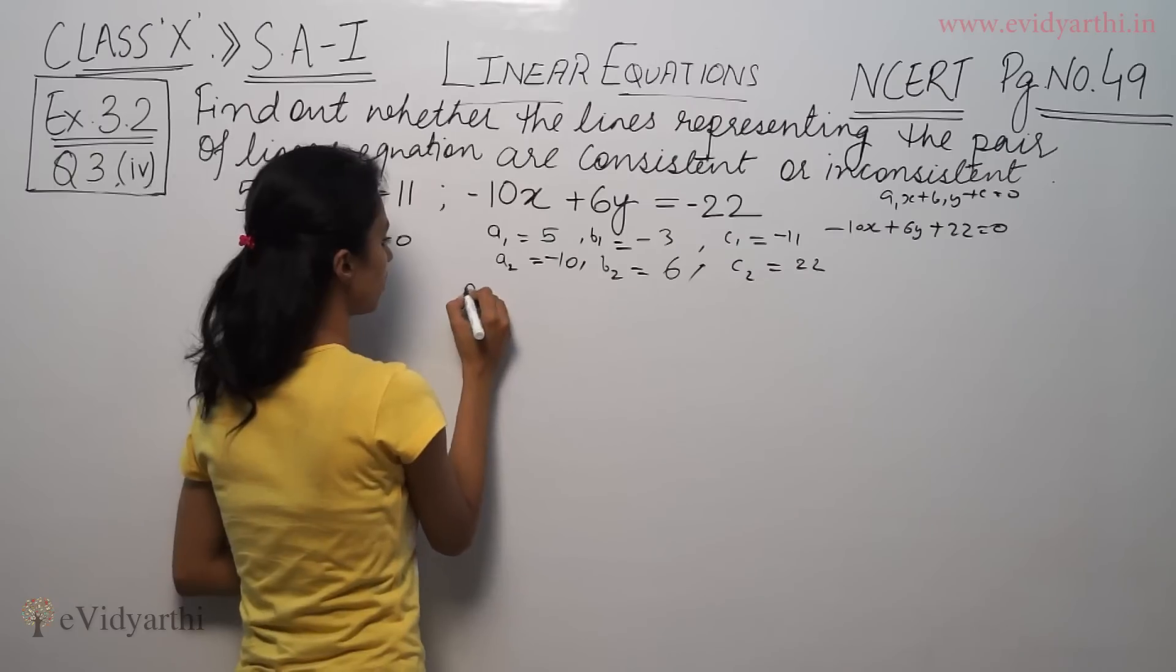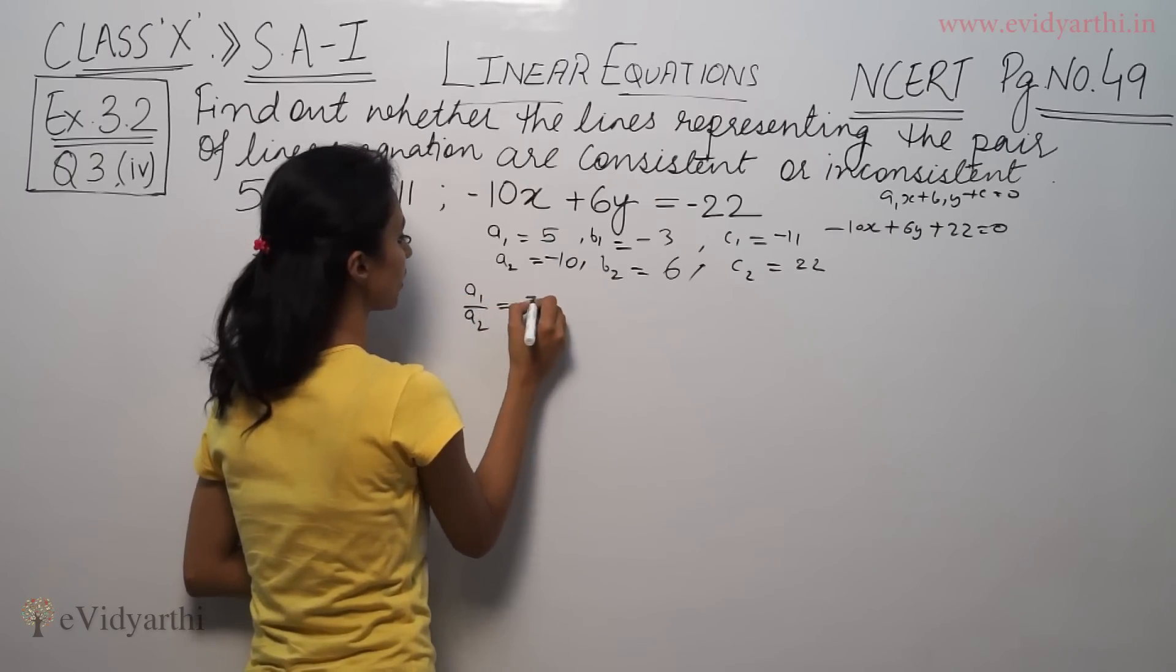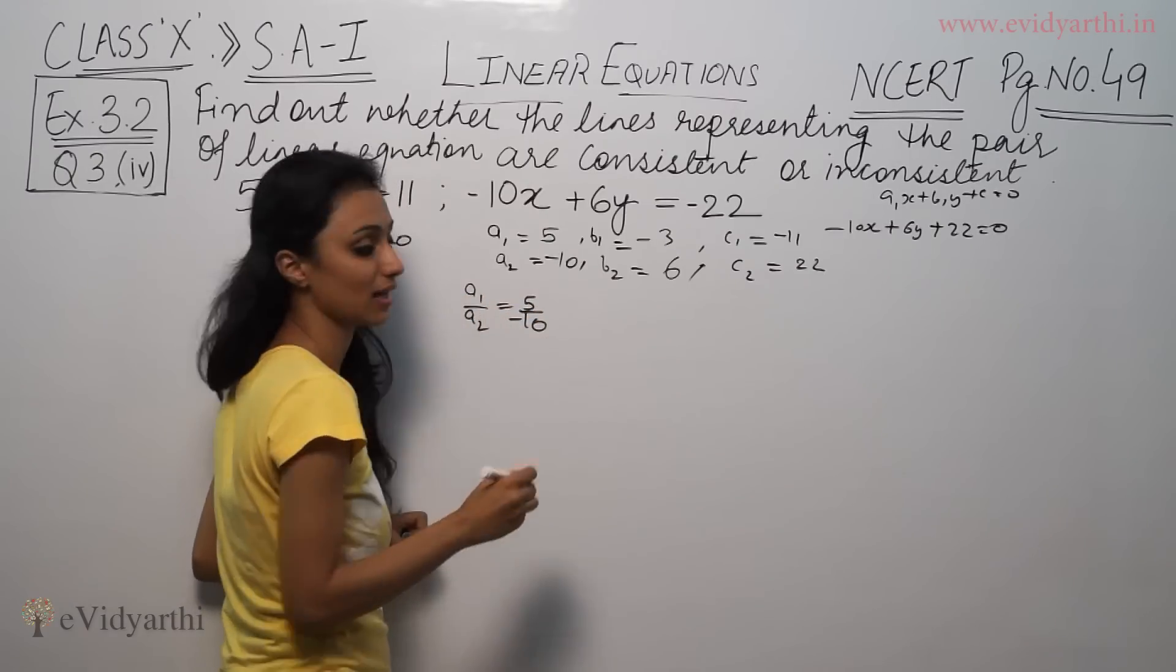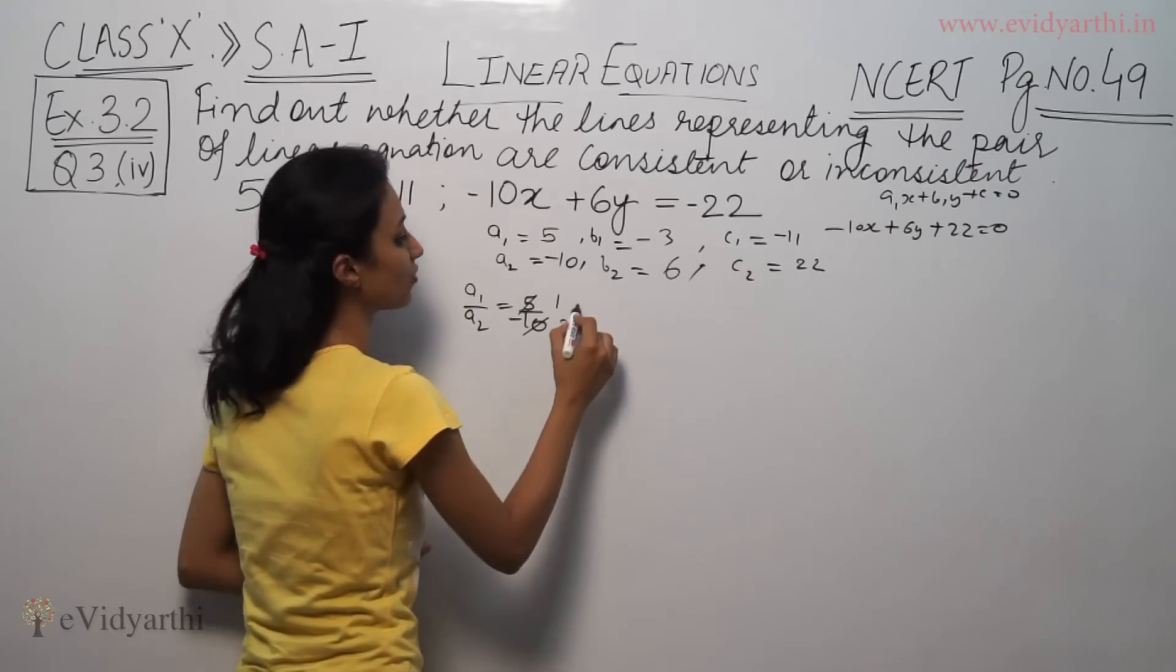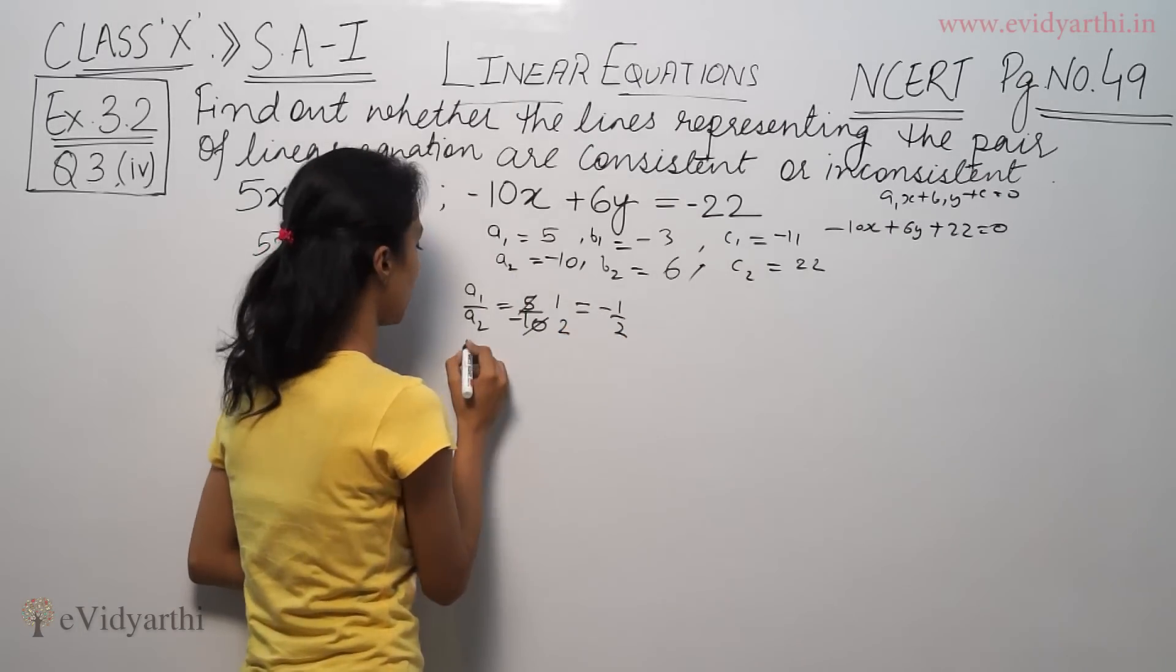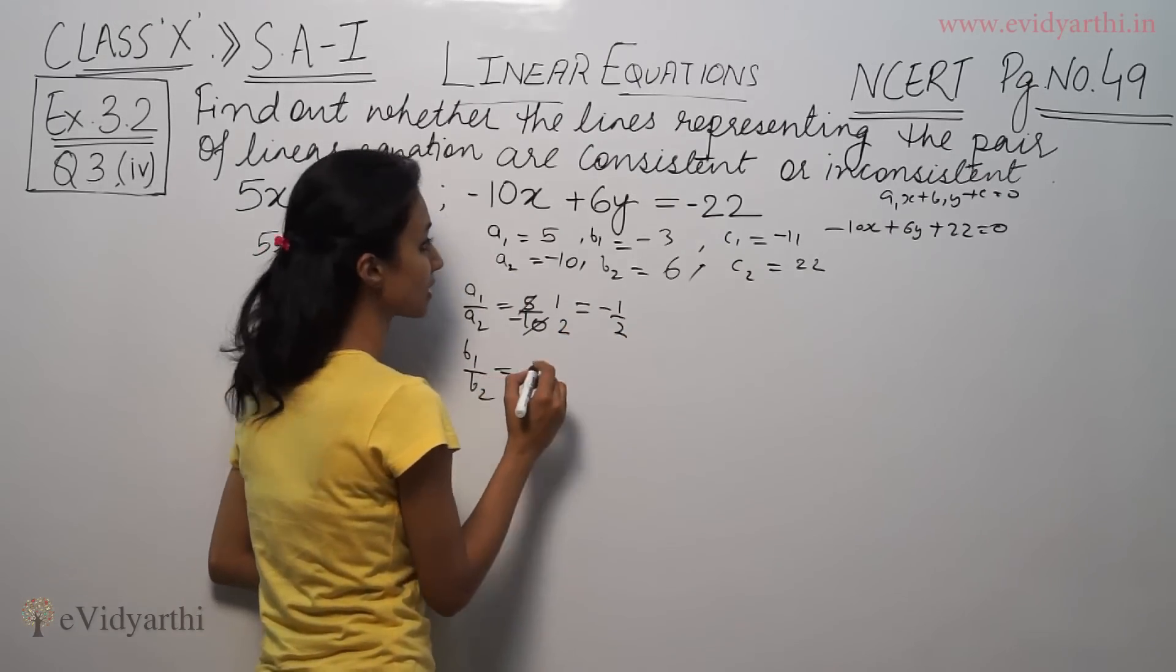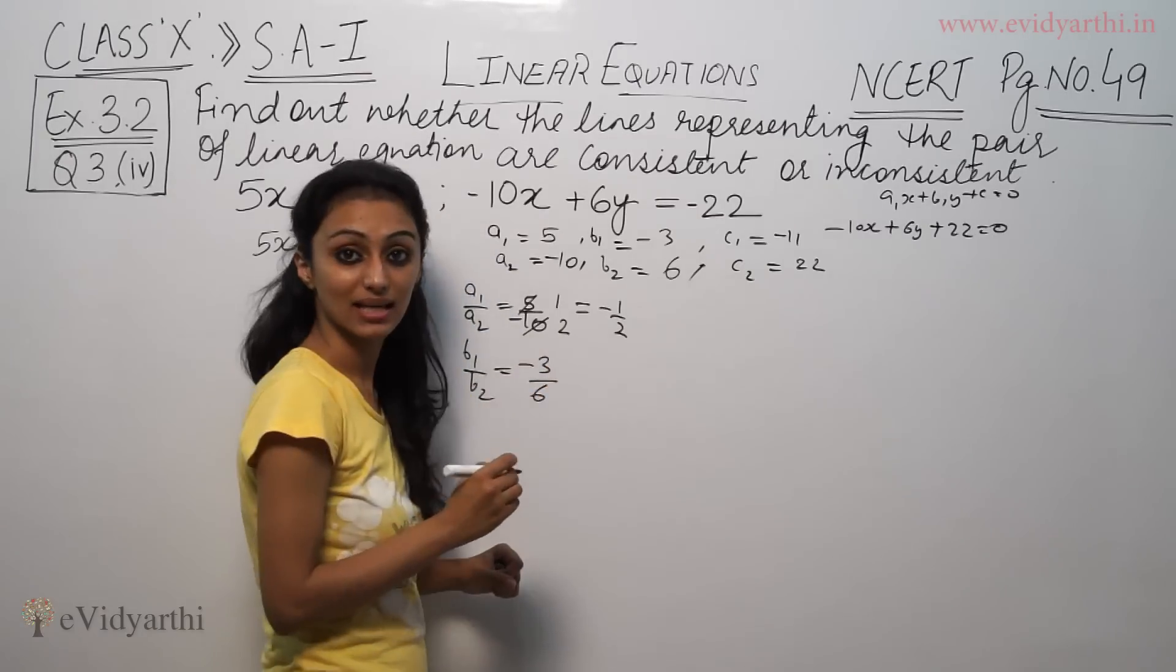So we have a1 by a2. a1 by a2, we have to take this equation, 5 by minus 10. 5 twos are, that means minus 1 by 2. b1 by b2, we have to take this equation, minus 3 upon 6.